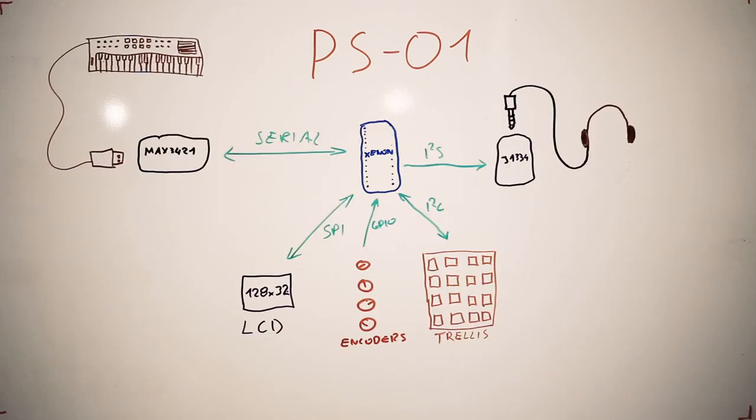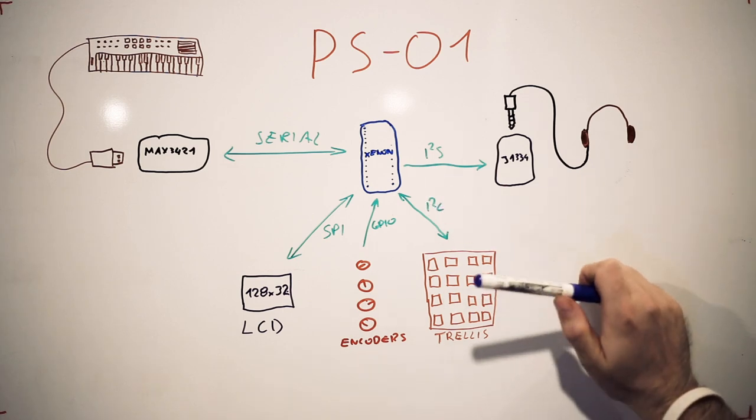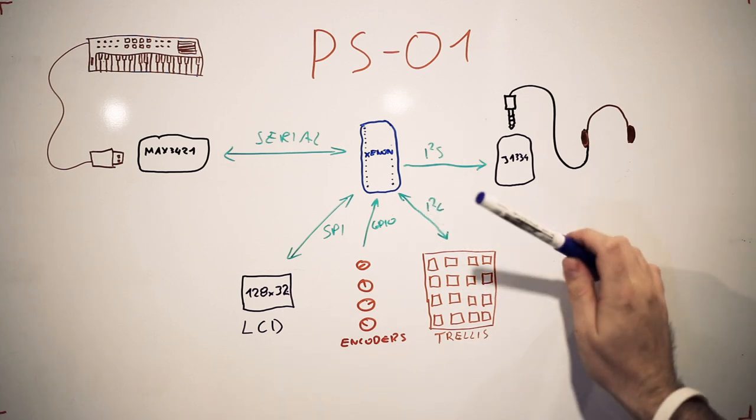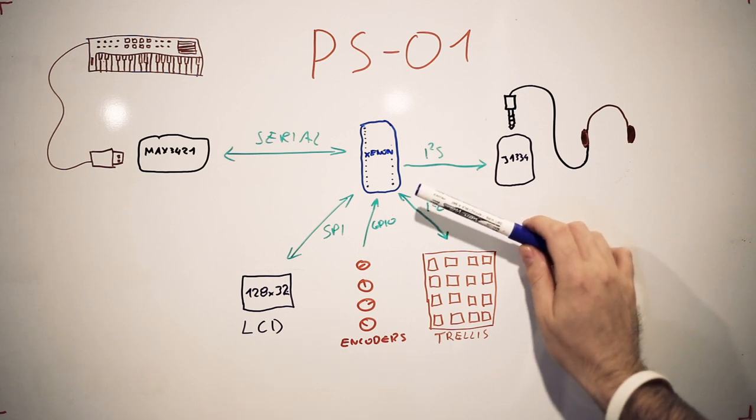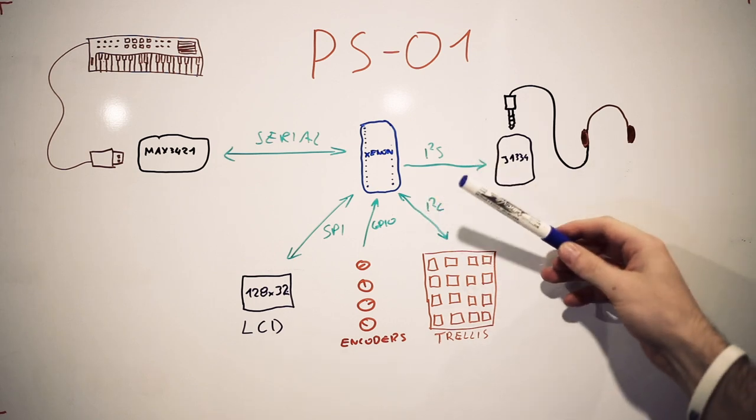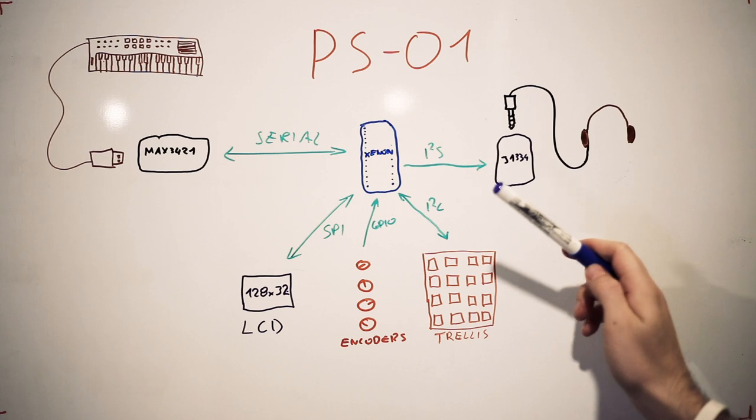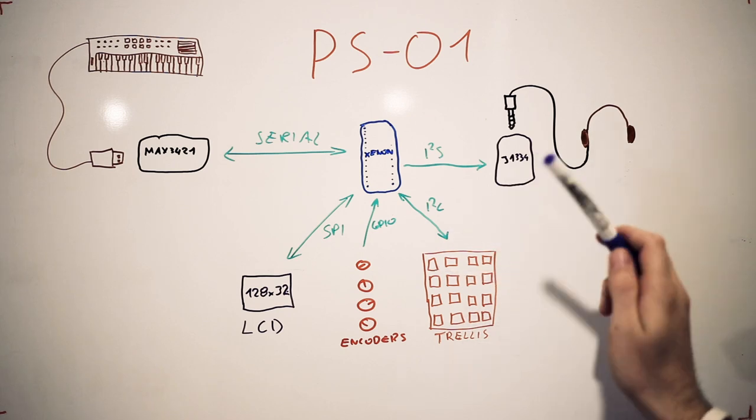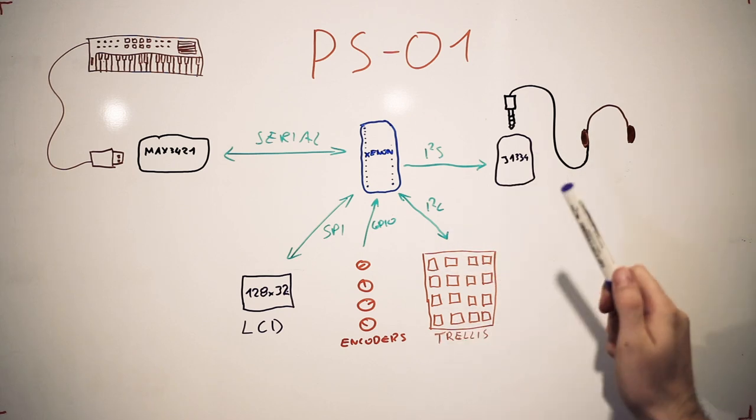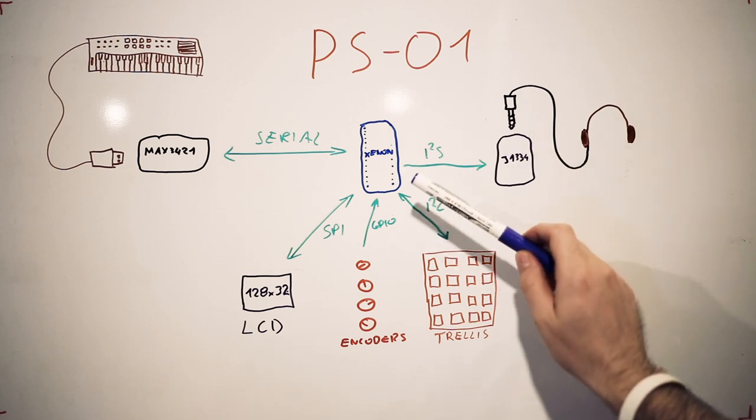Here we have a diagram of the PS-01 synthesizer with all the accessories connected to it. At the center is the Particle Xenon or any other third-gen Particle device. We're using Particle Xenon because it's very easy to use I2S and DMA in this case, so that helps us a lot.